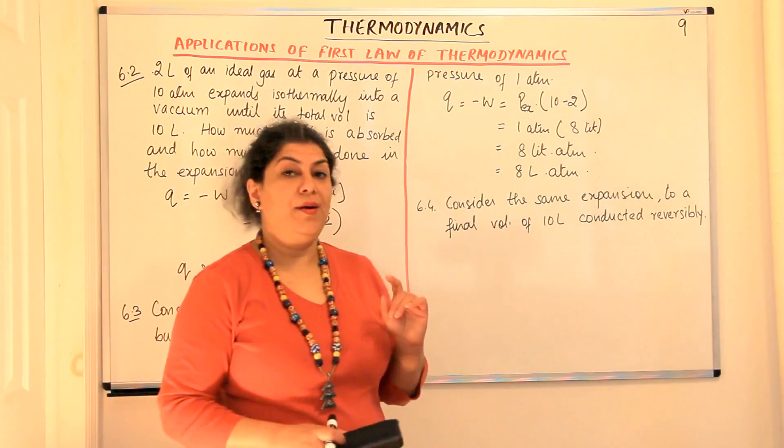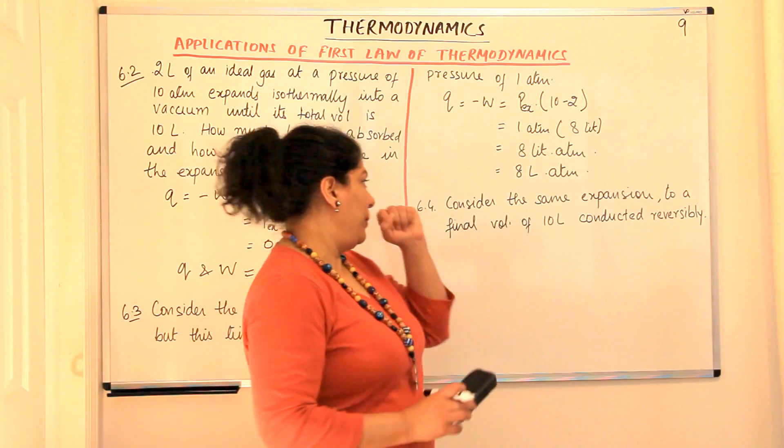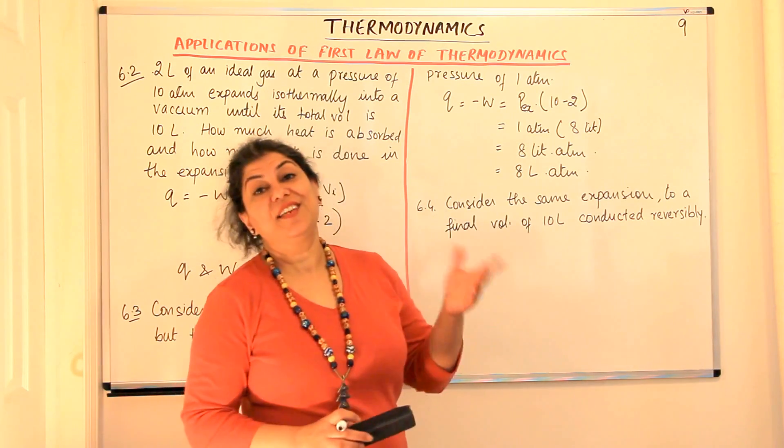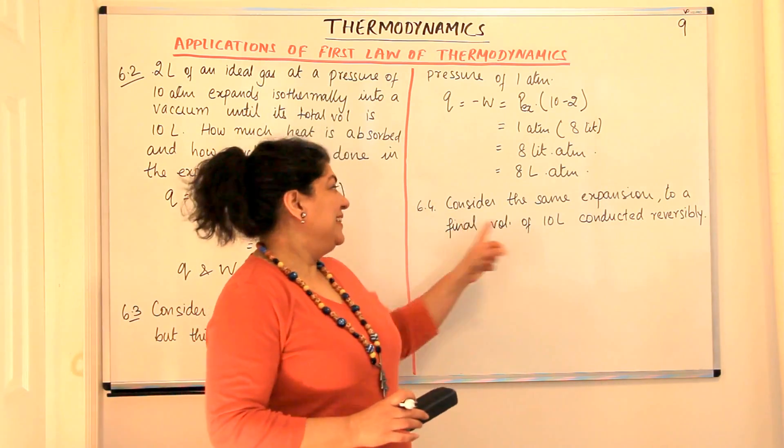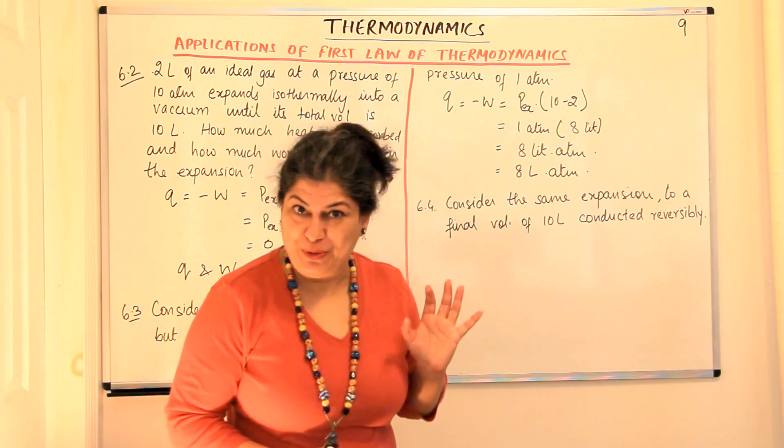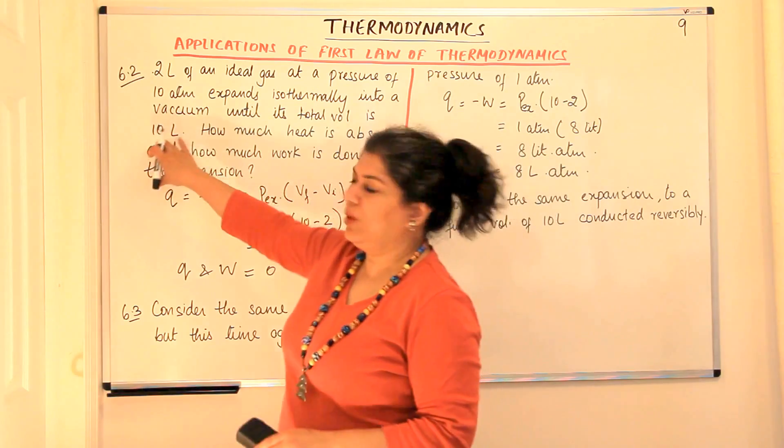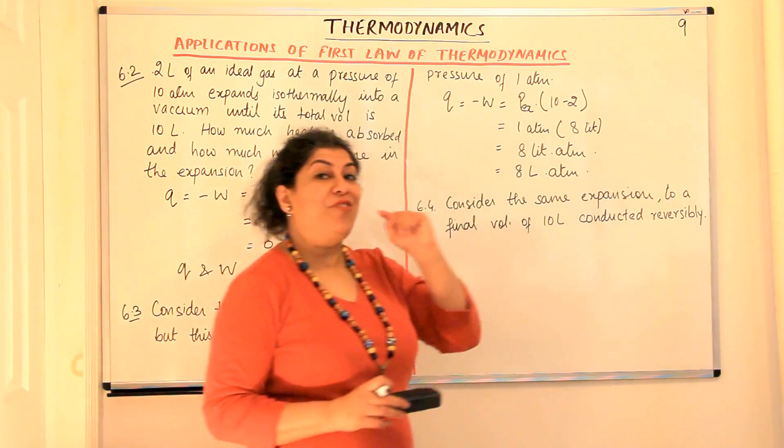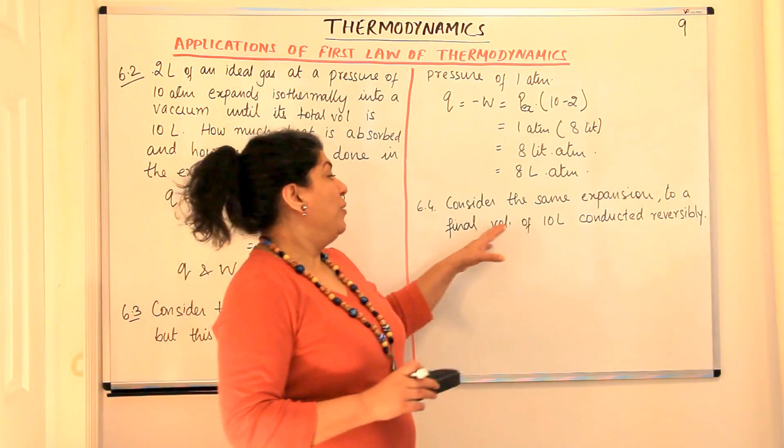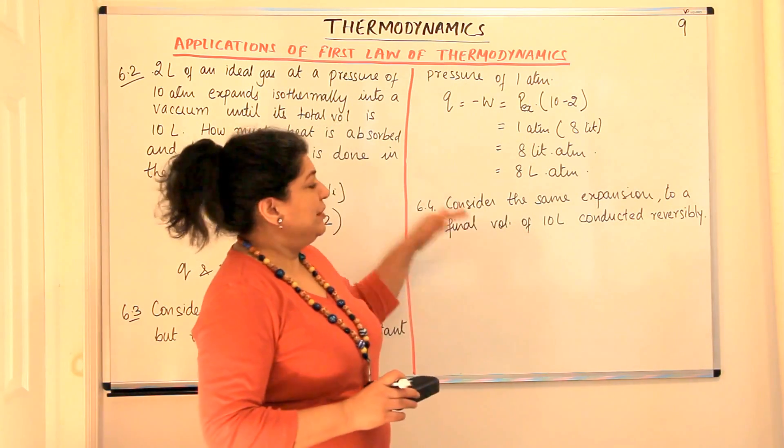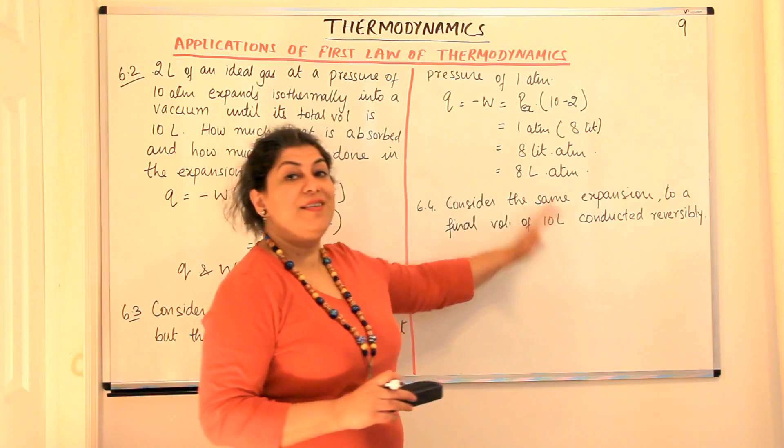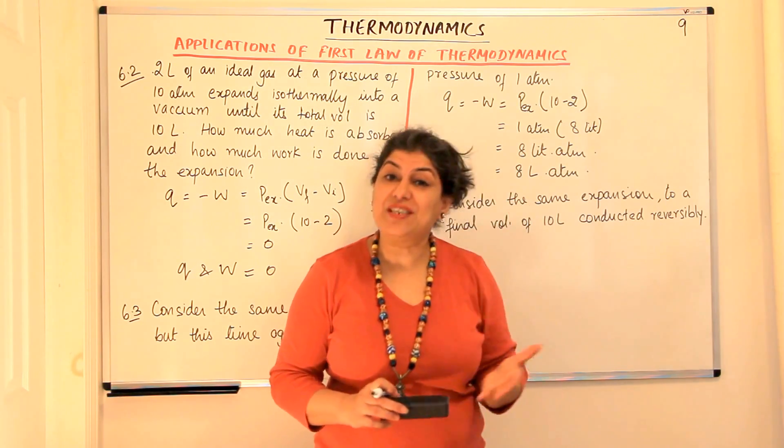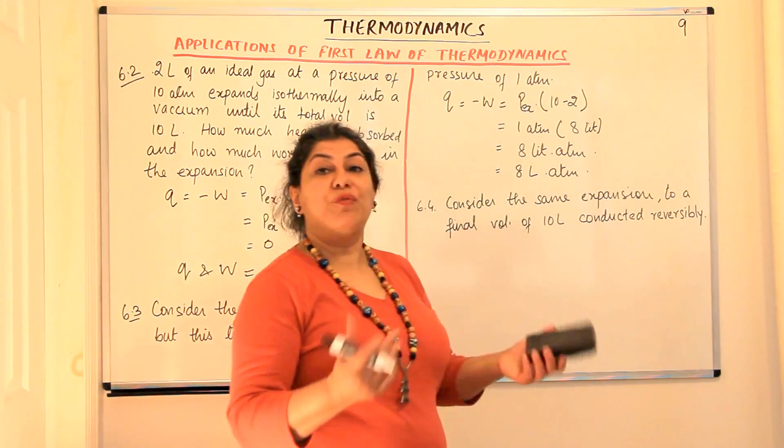So now let us come to 6.4. The question says that consider the same expansion to be to a final volume of 10 liters conducted reversibly. Now what has changed here? The 10 liter has only been thrown in to confuse you. What was the final volume here? The final volume was 10 liters. So by giving that information he's only just trying to distract you from the actual point. And what is it that you should be focusing on? What is the process like? So the initial volume is 2 liters, the final volume is 10 liters. It is an isothermal process which means temperature remains constant but it is conducted reversibly. It is a reversible process. So in that case what would the formula be?